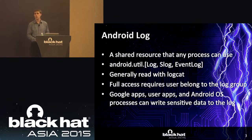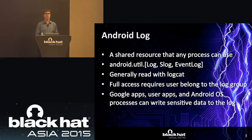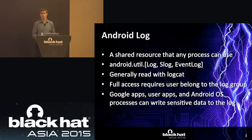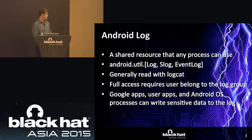Generally you read the log with logcat, which translates the log buffers from binary to plain text format. On current Android builds, your application gets a user ID and groups assigned depending on permissions when installed. You need to be part of the log group to get full access to the Android log. Google applications, user apps, third-party applications, as well as the Android operating system itself, can write sensitive data to the Android log.